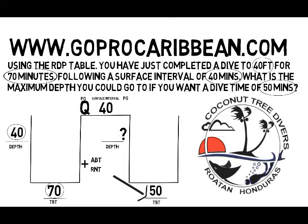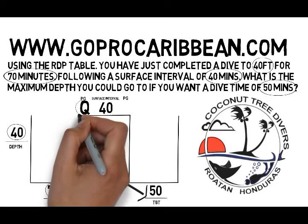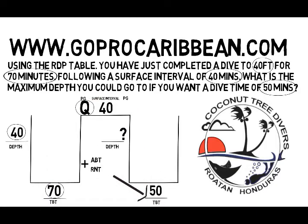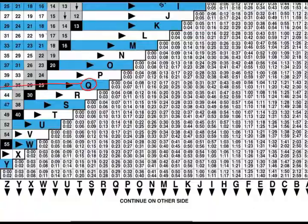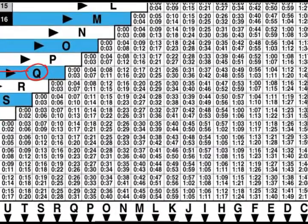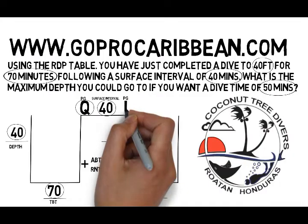Now we know our pressure group is Q, we can fill that in on the diagram and continue working from left to right. The next blank is the pressure group after the surface interval. The information we'll use is that we ended dive one in pressure group Q and our surface interval is 40 minutes. Scrolling along to pressure group Q, we find the range our surface interval falls within: 37 to 42 minutes, which puts us in pressure group I. So at the end of the surface interval, before we get in the water for our second dive, we will be in pressure group I.